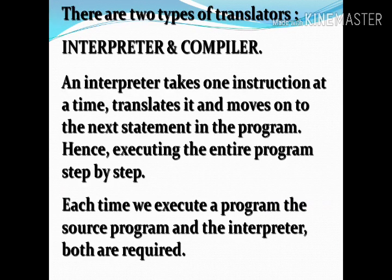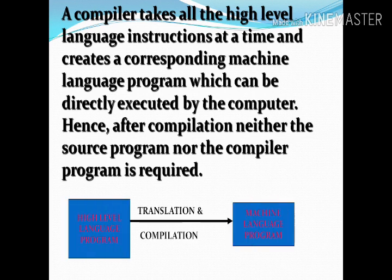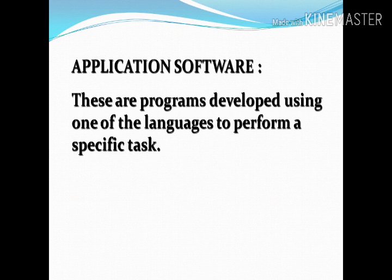An interpreter interprets machine-level language line by line, while a compiler executes the whole program at a time. The compiler takes all the high-level language instructions at a time and creates corresponding machine language. High-level language translation and compilation gives us the machine-level language program. Application software consists of programs developed using a language to perform a specific task.